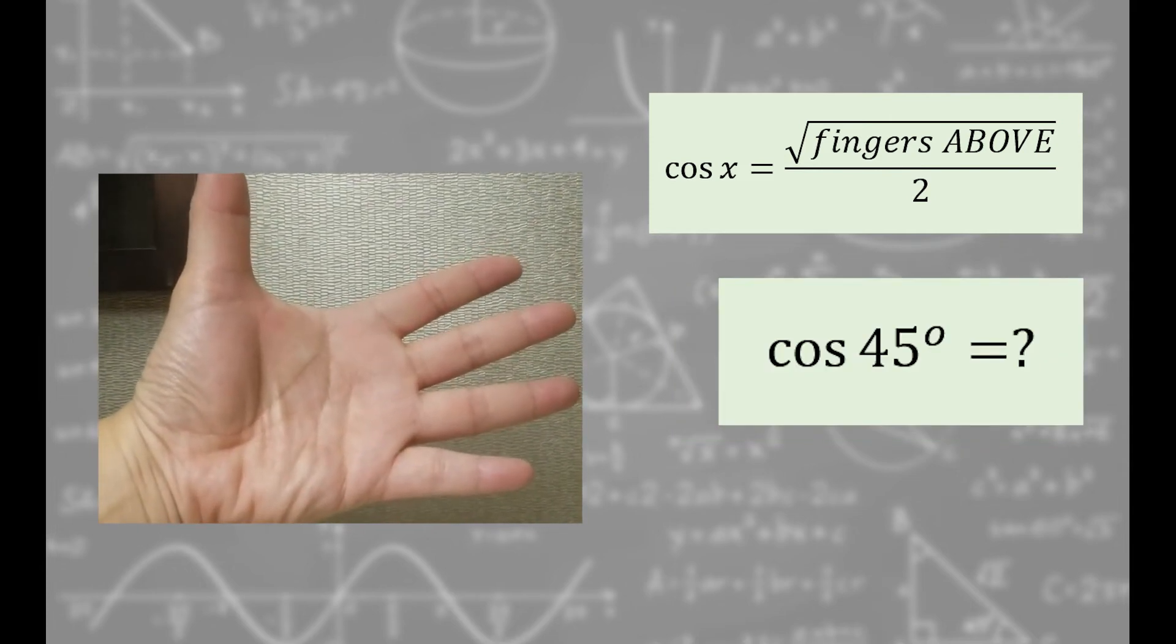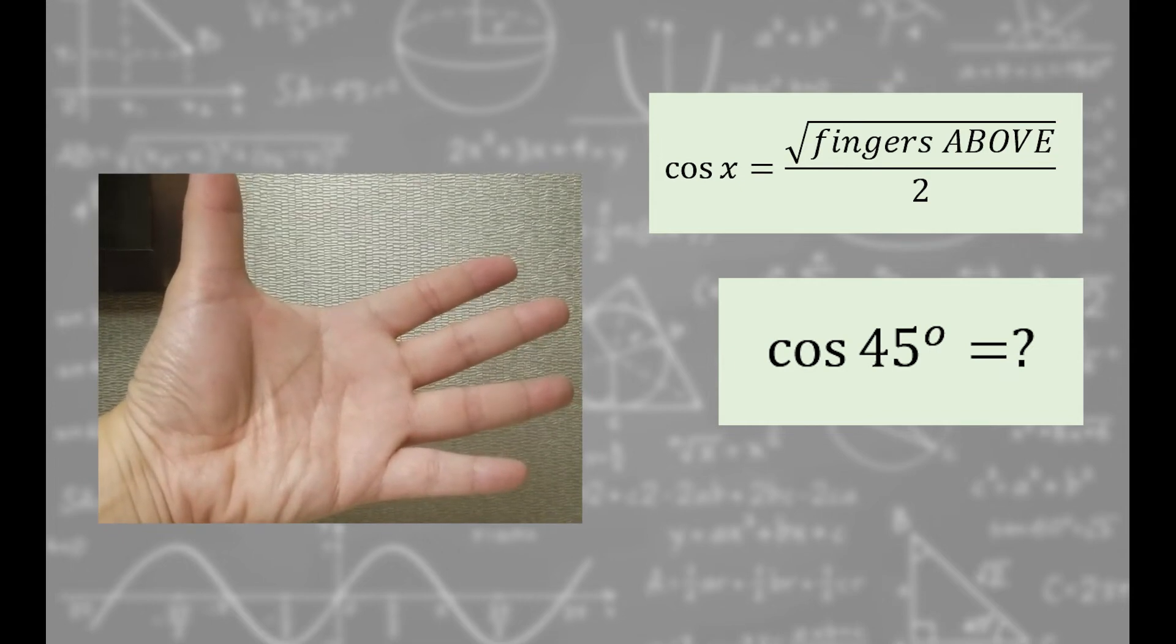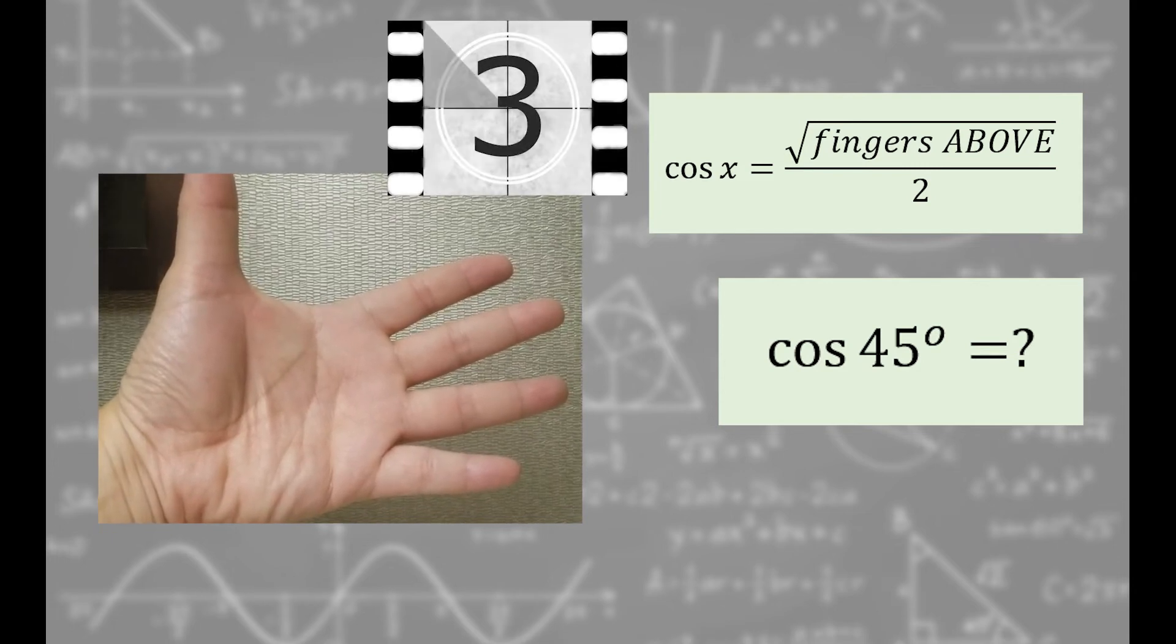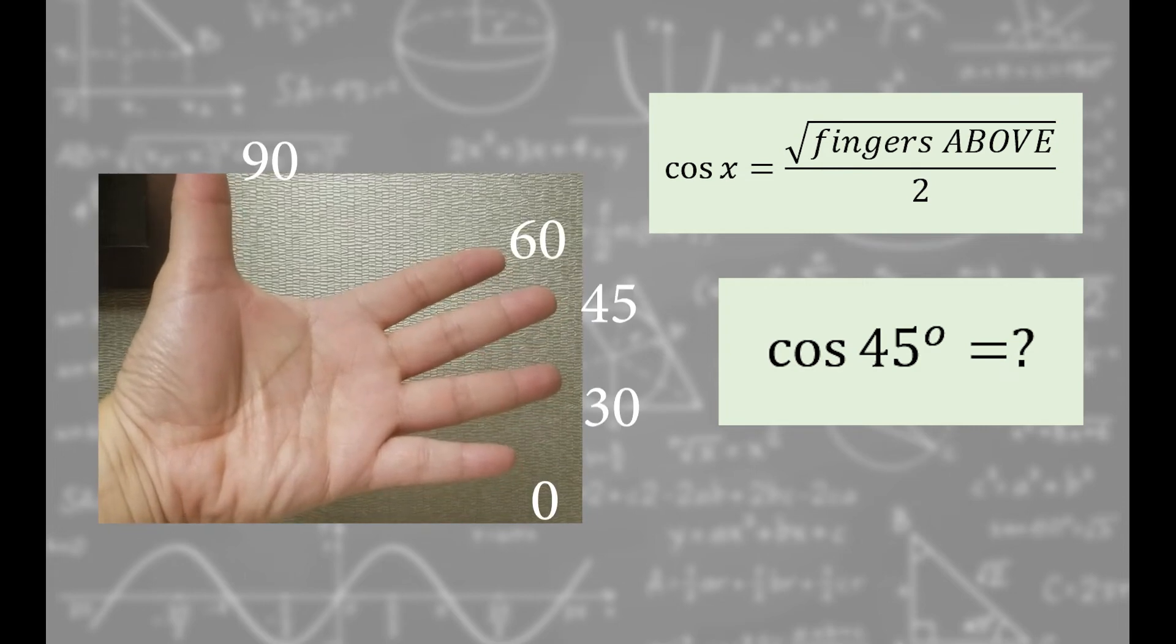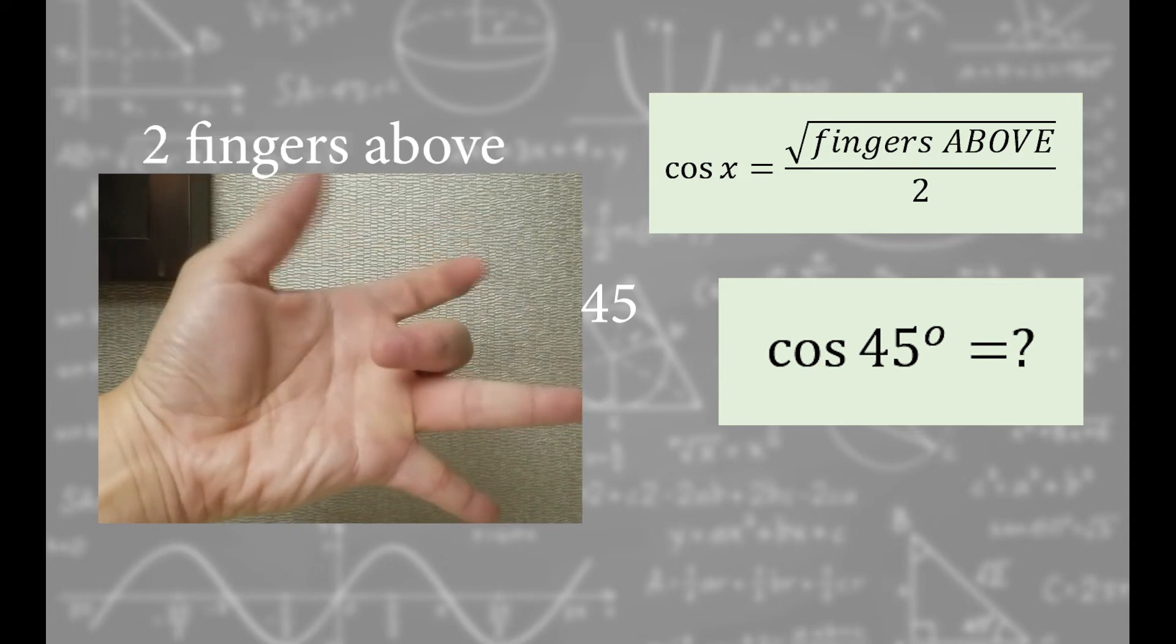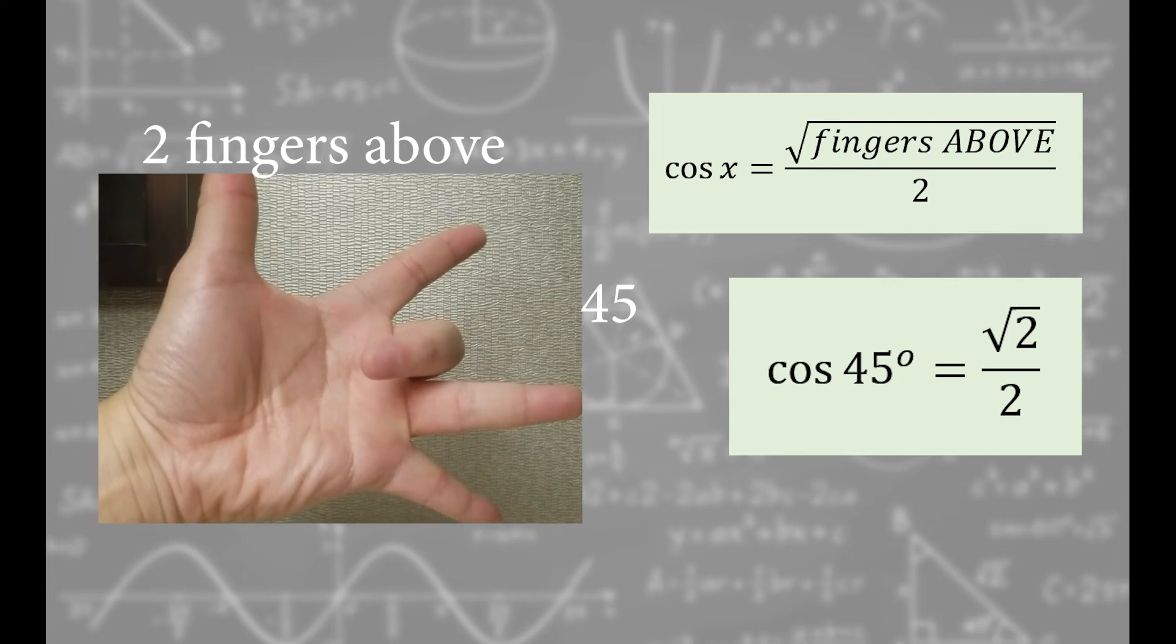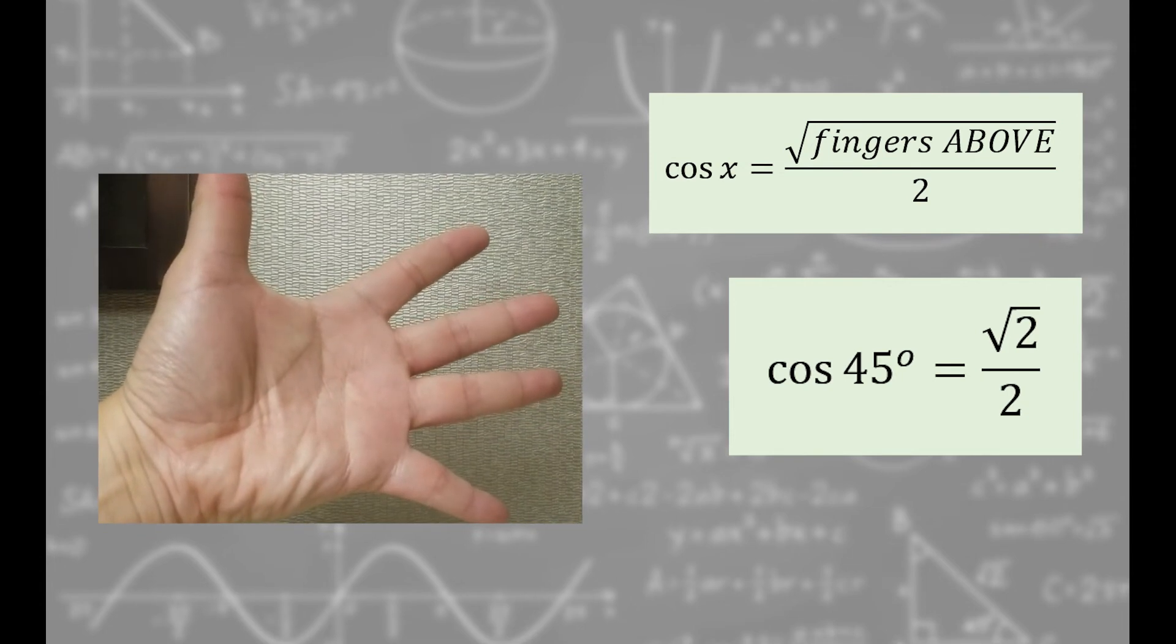Now you try cosine 45 degrees. Hit pause and try to figure it out first. 45 degrees is this finger. Bend it in. Two fingers above, so cosine 45 degrees equals square root of 2 over 2. Go ahead and try with other angles and don't forget to simplify when you can.